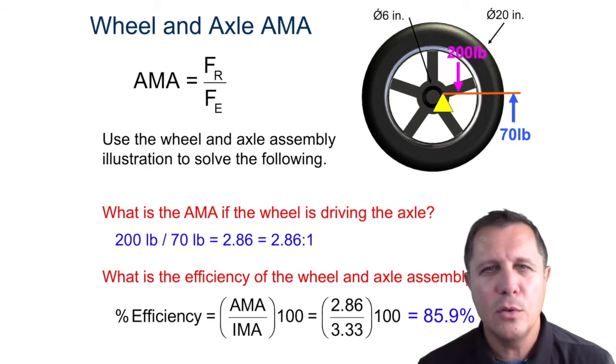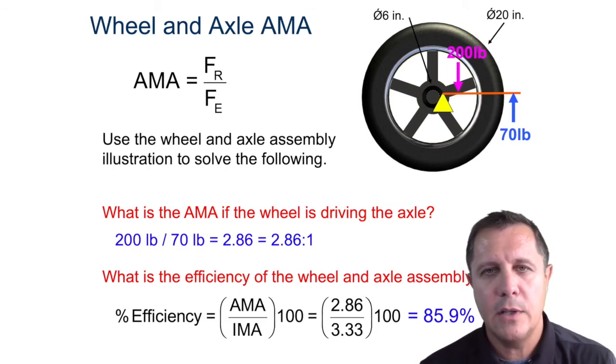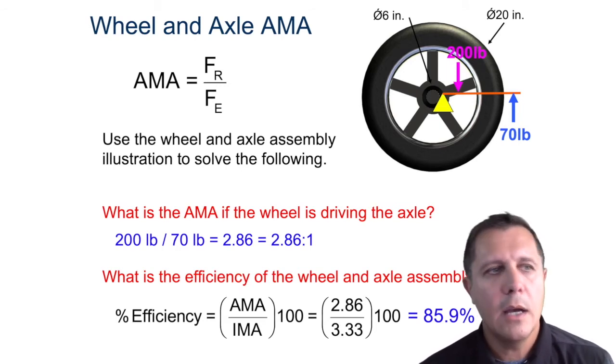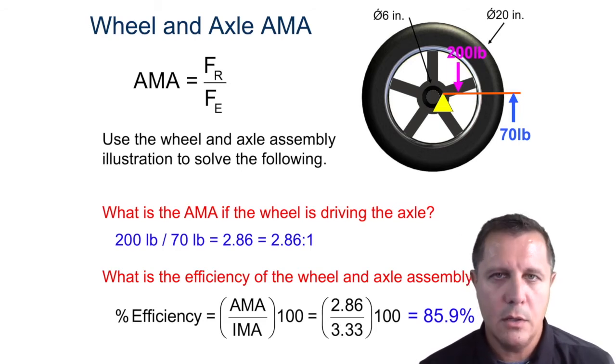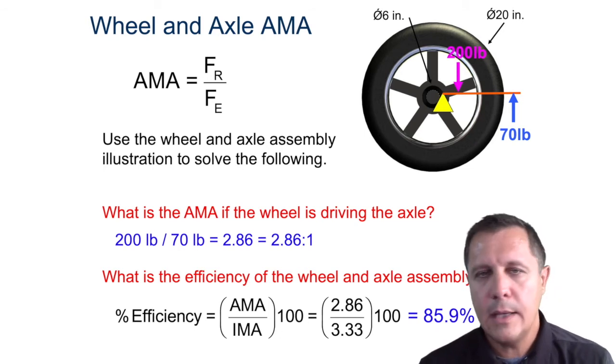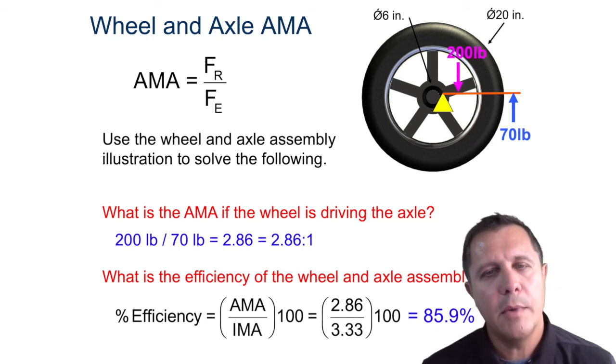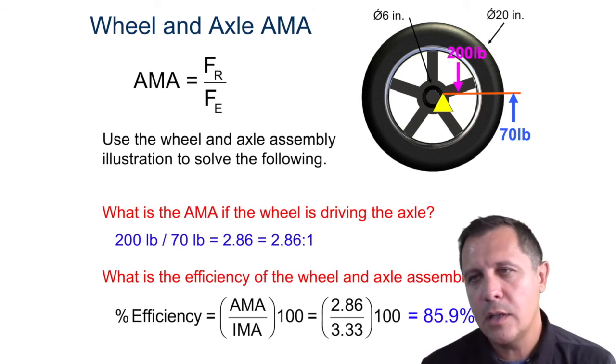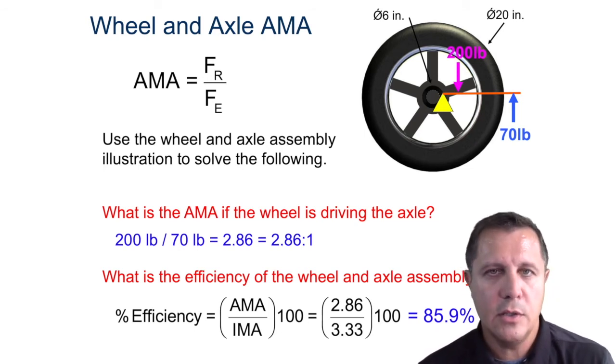Why are we losing energy? Why is something not 100% efficient? Because you have friction — you lose things to heat all the time due to friction. Nothing's 100% efficient.